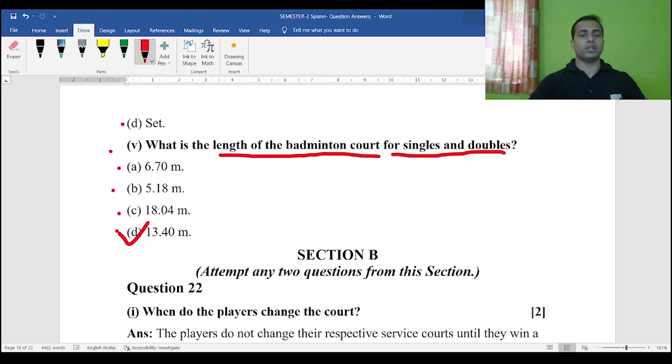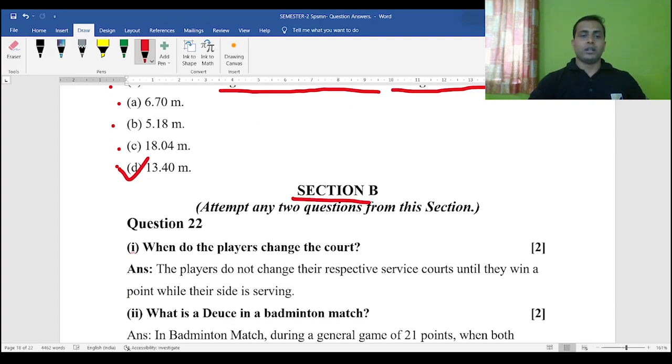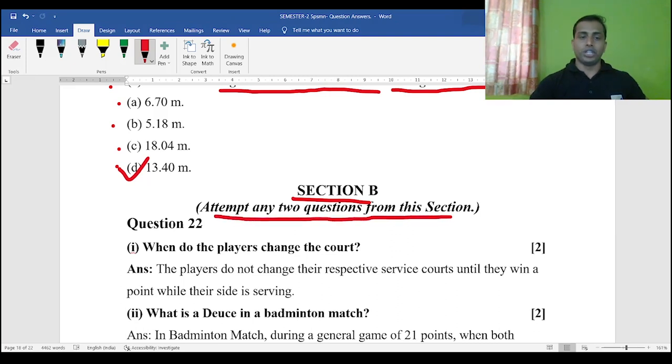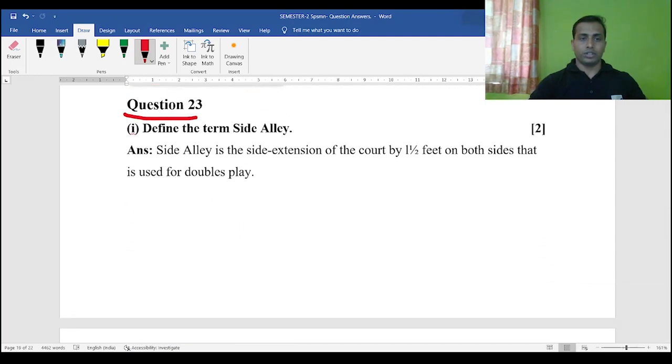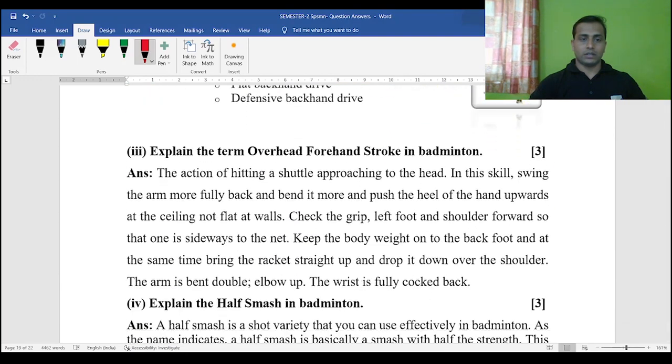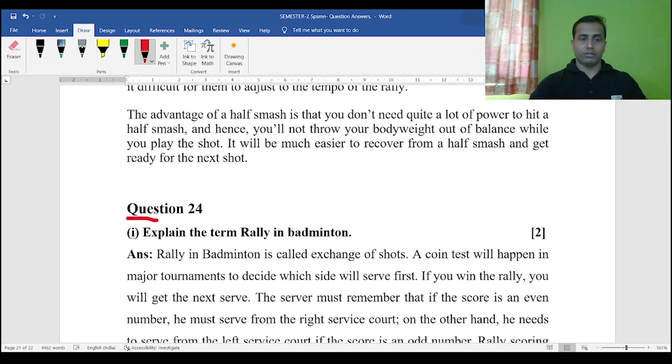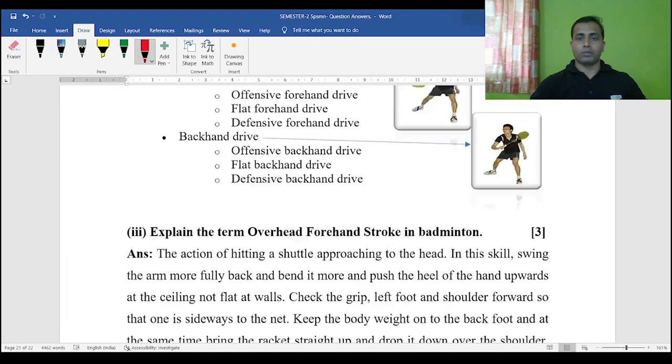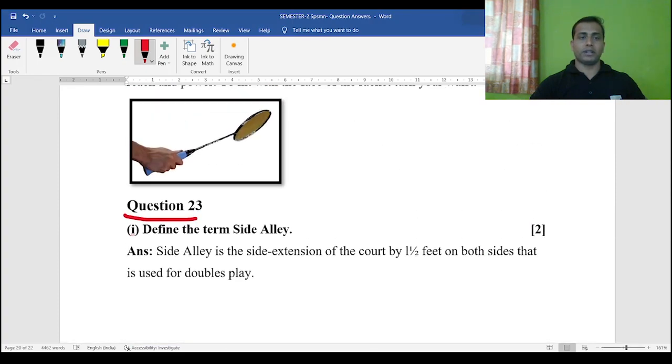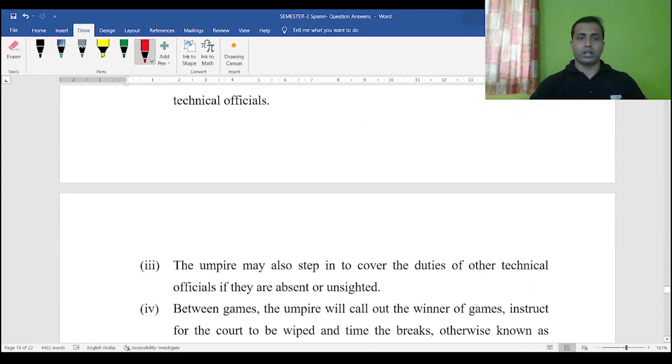Now coming to Section B. Just look into it very carefully. Attempt any two questions from this section. So there will be three questions as you can see: question number 22, question number 23, and question number 24. Out of these three questions you need to attempt any two. Anyway, I have given the answers of all the questions given in this specimen paper.